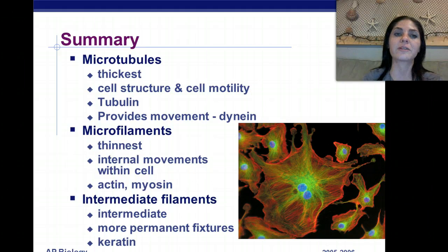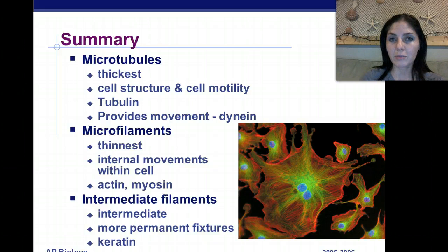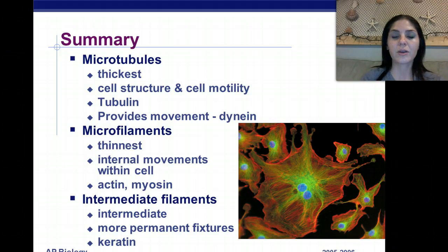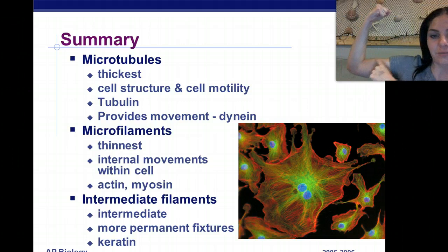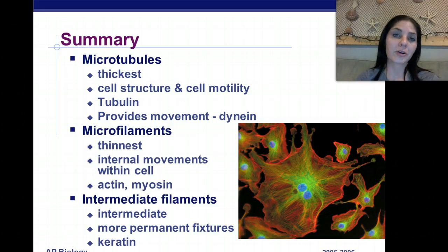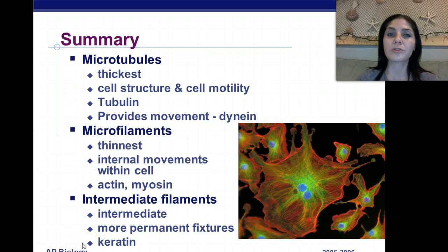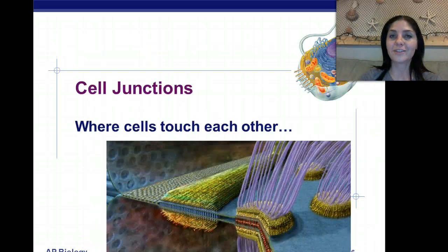In summary, we have three types of cytoskeletal fibers. We have microtubules, which are the thickest, composed of tubulin proteins, and they serve for cell structure and cell motility — like our cilia and flagella — with dynein providing the movement of those structures. We have microfilaments, which are the thinnest, responsible for internal movements within the cell like cytoplasmic streaming, composed of actin and myosin — which is also responsible for muscle contraction. And finally intermediate filaments, which are intermediate in size, the more permanent fixtures in the cell, composed of keratin. I'll see you next time when we talk about cell junctions, which is where cells touch each other.